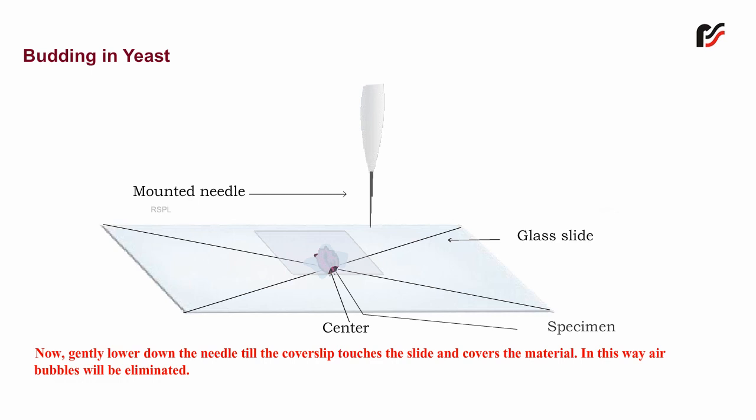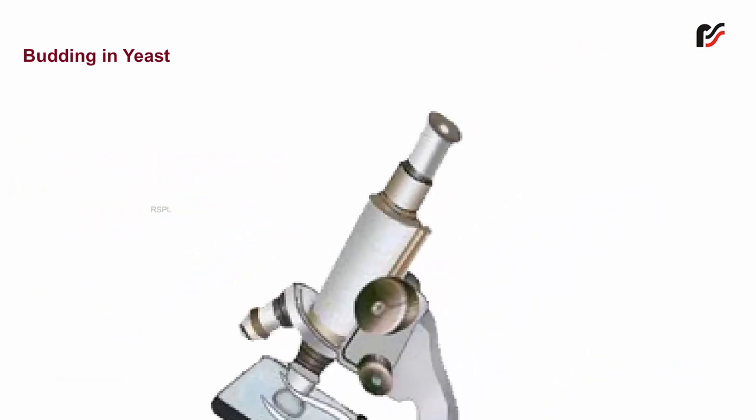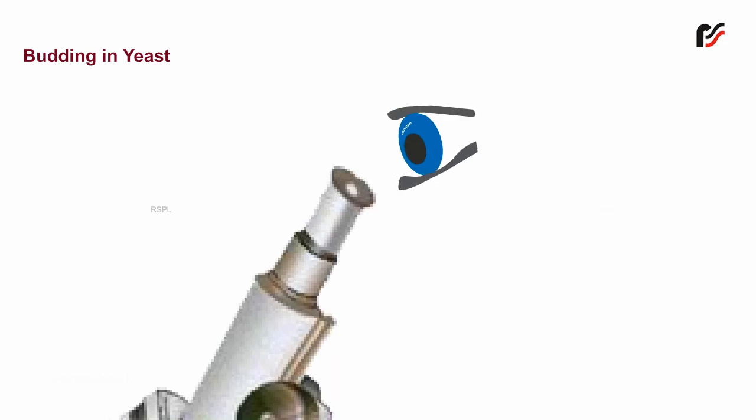Now place the slide on stage and focus at low power. Observe it. The nucleus divides mitotically to form two daughter nuclei, of which one passes into the bud. Without removing the slide, now change the focus to high power.